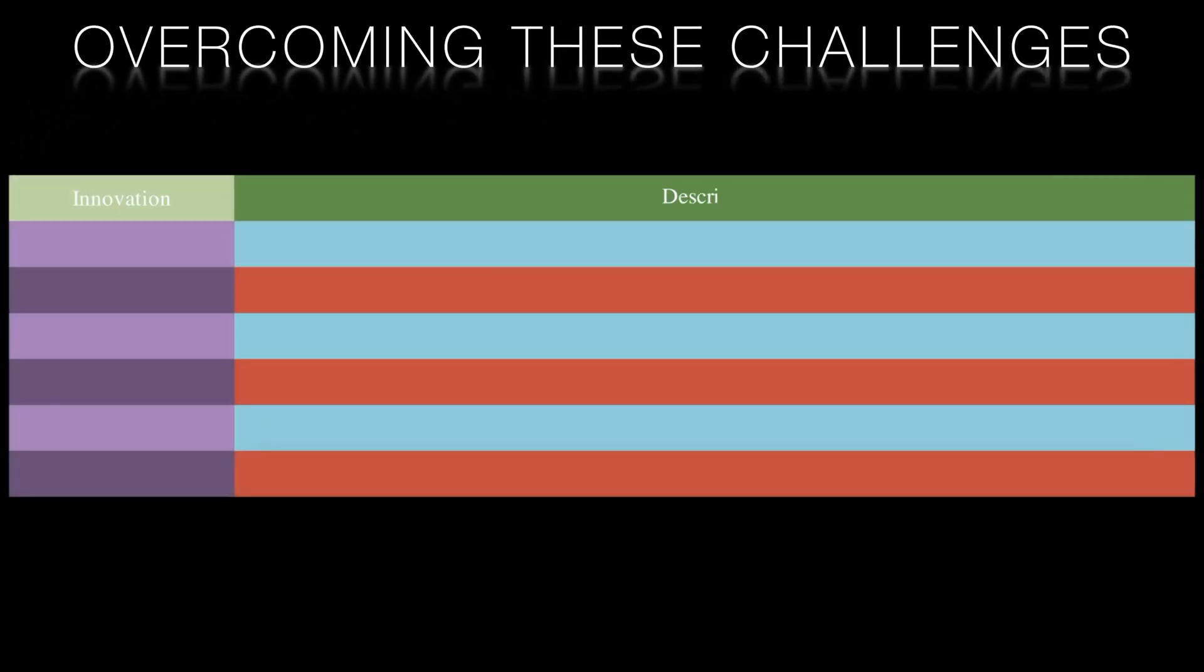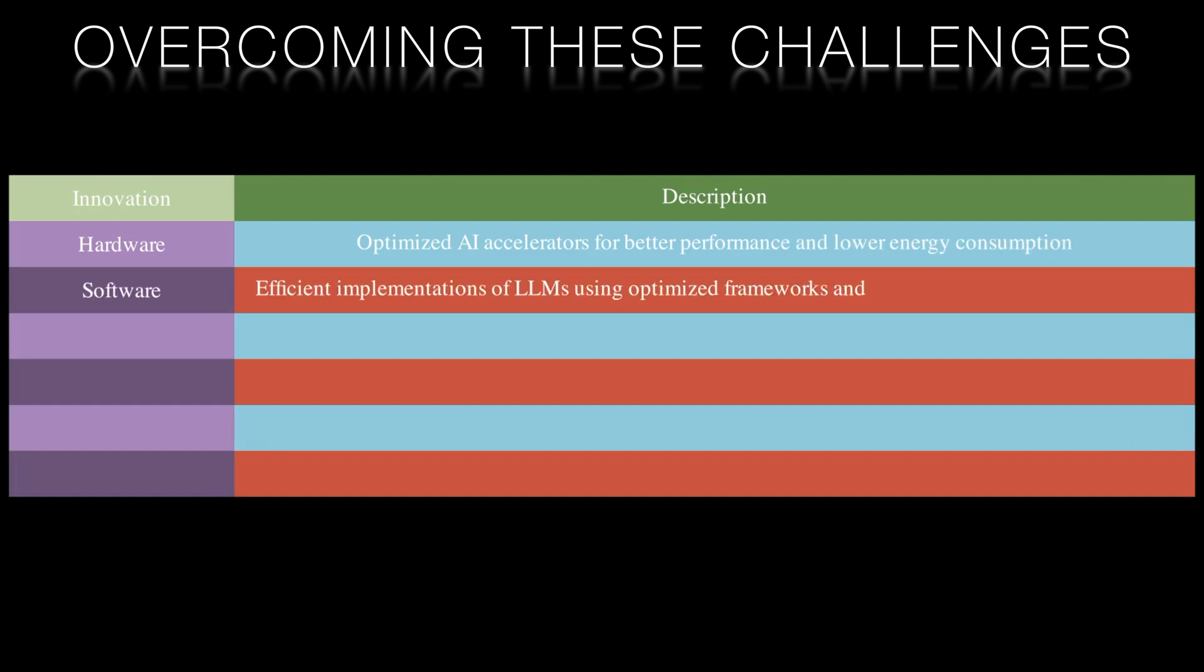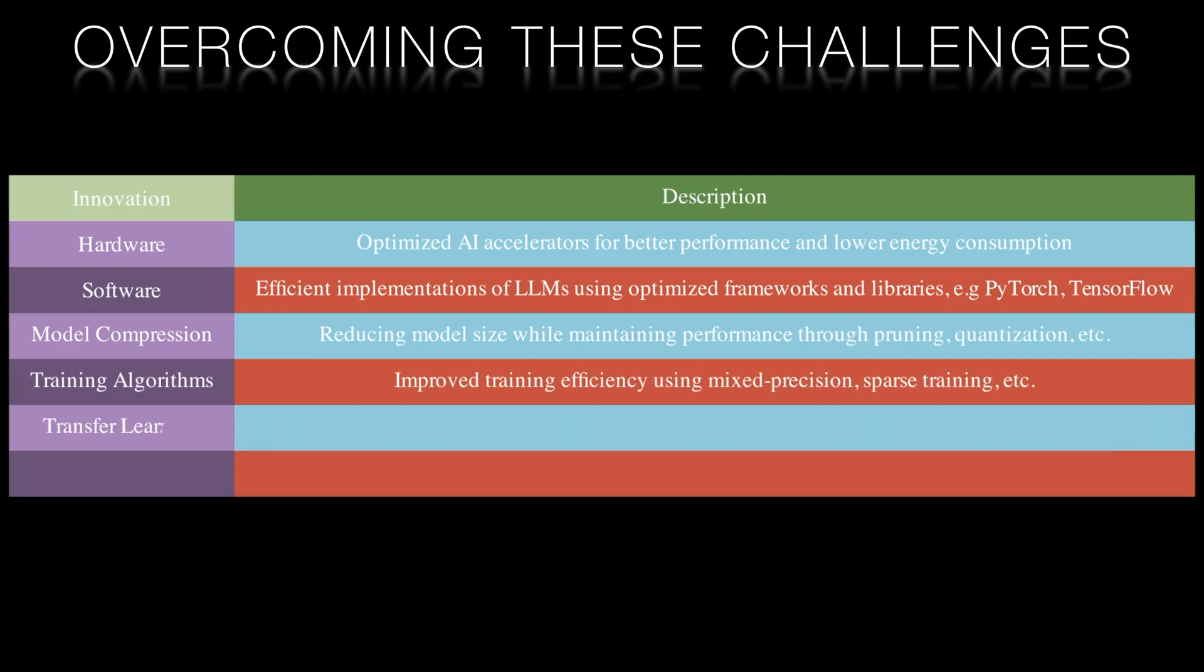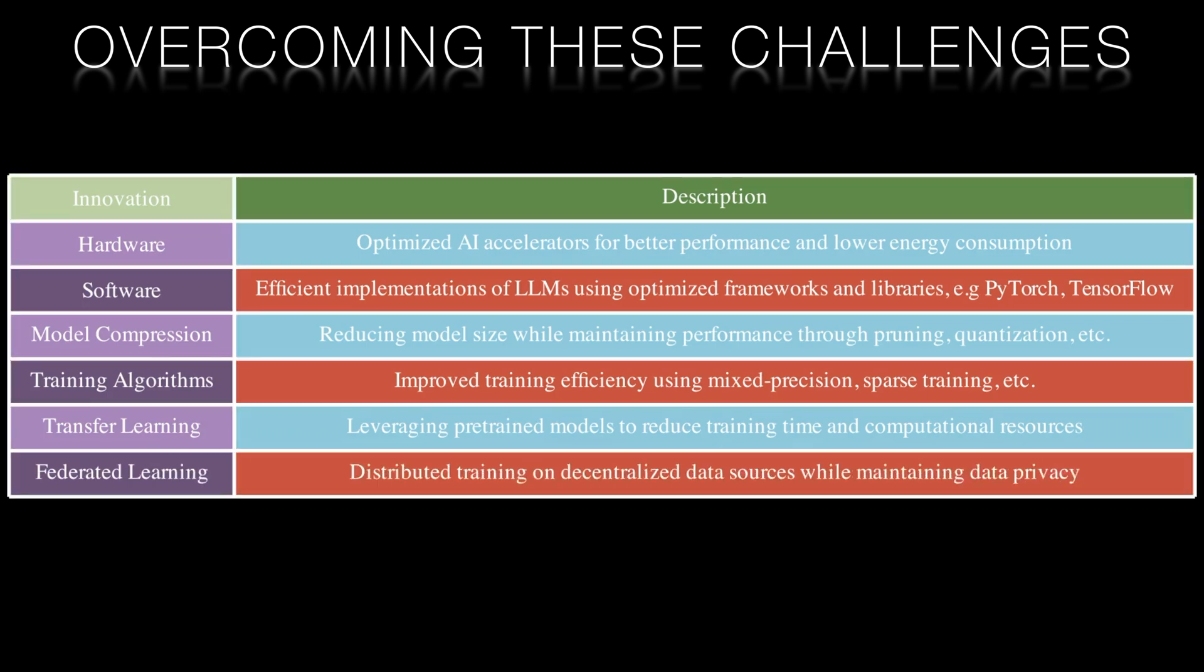Despite these challenges, ongoing research and development is focused on addressing the issues of scaling and resource constraints. Innovations in hardware, software, and training techniques have the potential to reduce costs and improve the efficiency of LLMs. As the AI landscape continues to evolve, we can expect to see more cost-effective and sustainable approaches to developing and scaling up large language models like GPT-4.